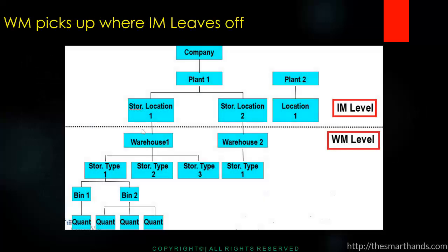WM picks up where inventory management leaves off. Looking at the organizational structure: the top part represents inventory management — or the MM side — with plant and storage location. Underneath the storage location, the warehouse management level begins with a warehouse number. The warehouse number contains storage types, storage types contain bins, and bins contain quants. We will cover all these details in the next videos.